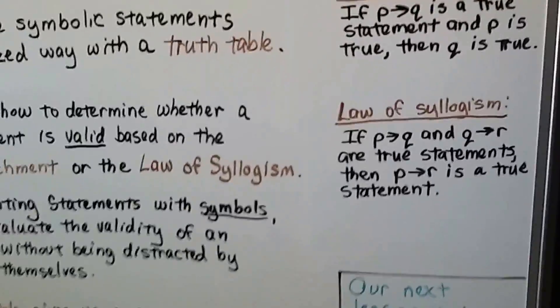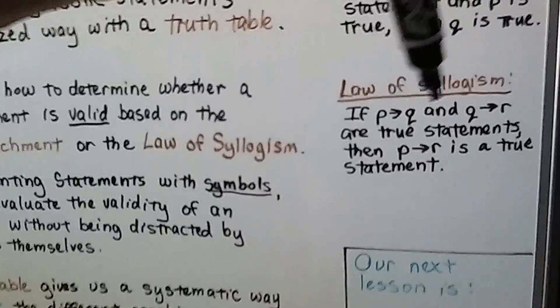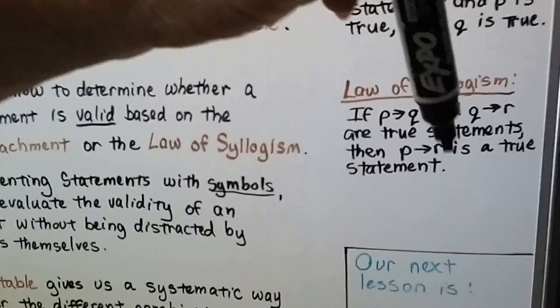And this was the one that was sort of like the transitive property. A equals B, B equals C, so A equals C.